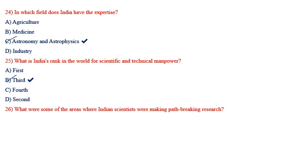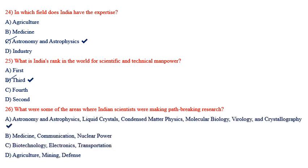What were some of the areas where Indian scientists were making path-breaking research? Options: astronomy and astrophysics, liquid crystals, condensed matter physics, molecular biology, biology and crystallography. The remaining options include medicine, communication, nuclear power, biotechnology, electronics, transportation, agriculture, mining and defense.